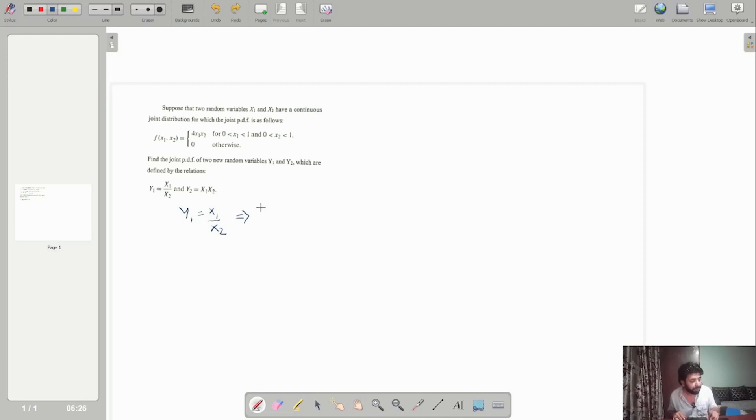From the first equation, if I say y1 equals x1 times x2, I can actually write this as x1 equals y1 multiplied by x2. Similarly, if I go for the second equation, then I can actually find out the value of x2.